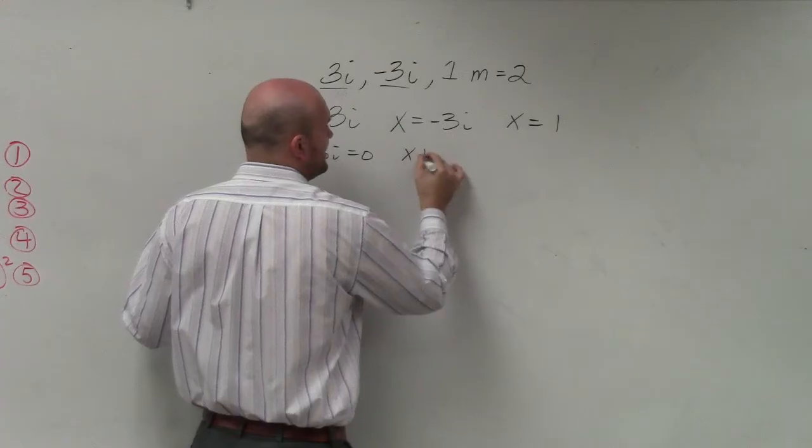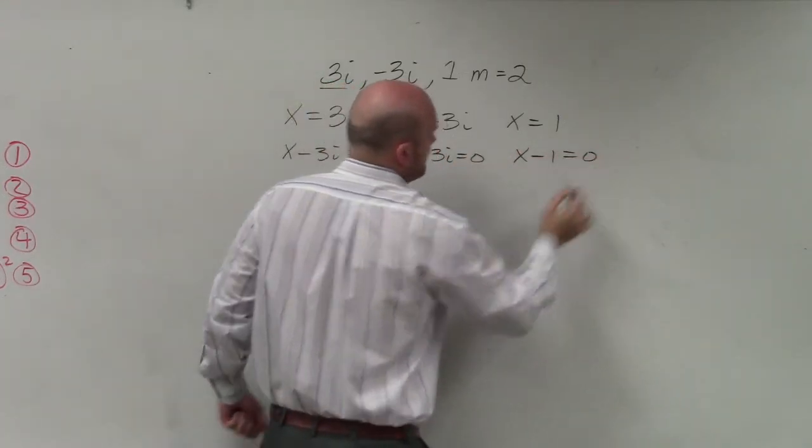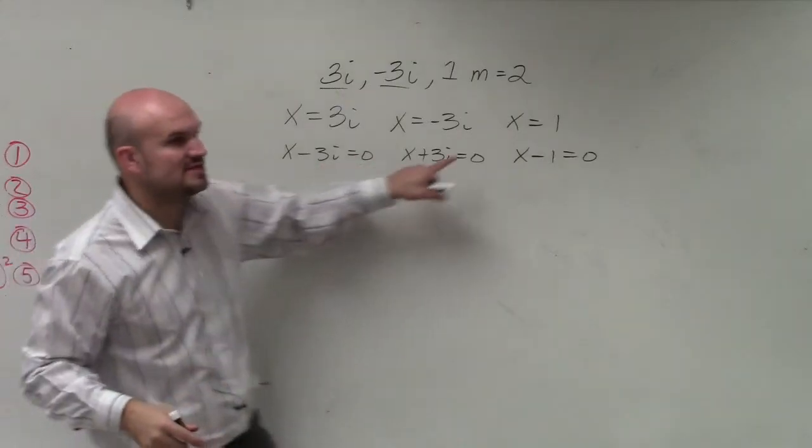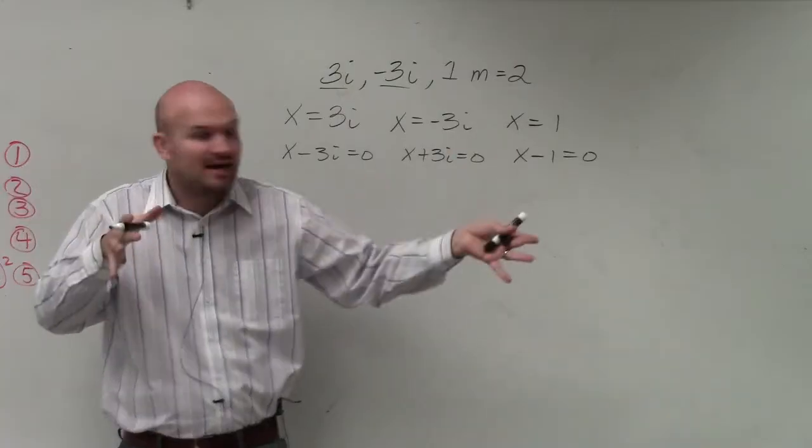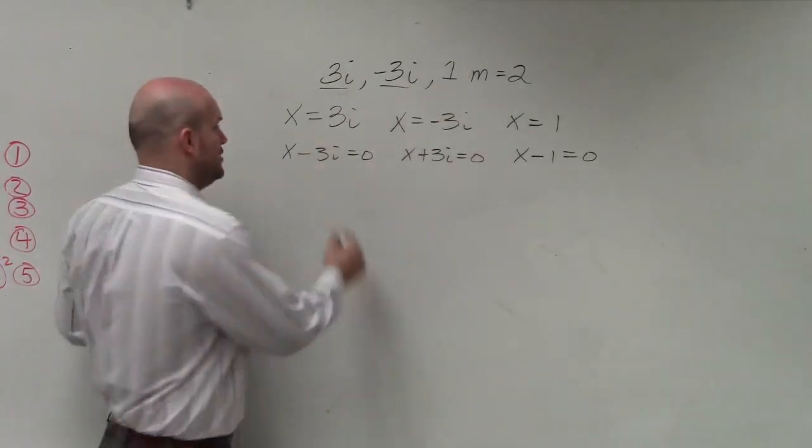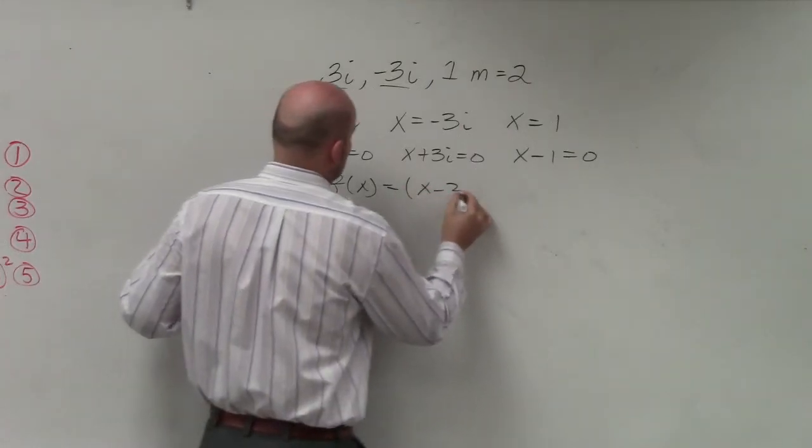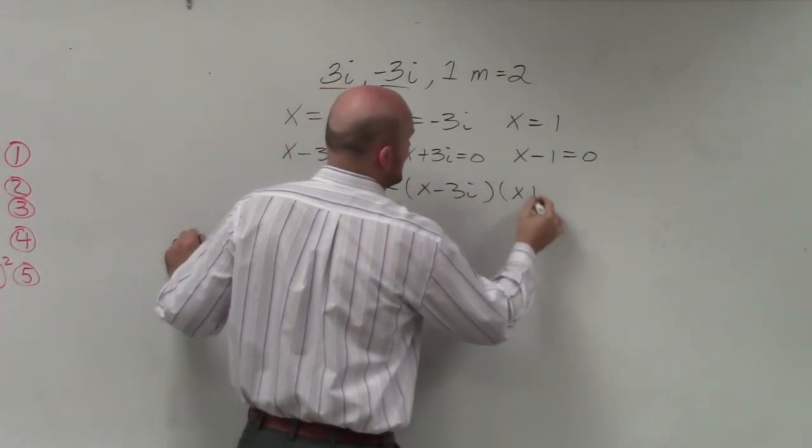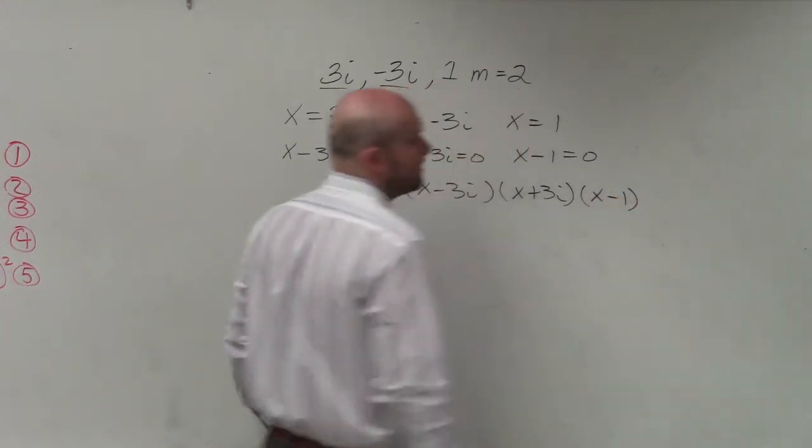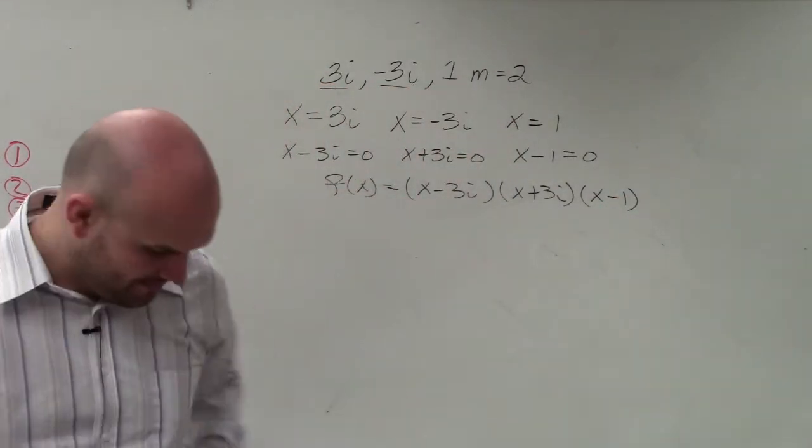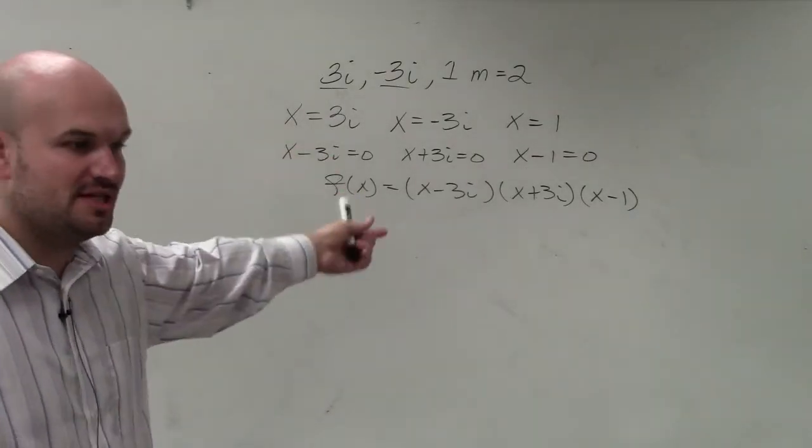Since they're all set equal to 0, those are the factors. I can write the factors multiplied by each other to give me my polynomial. So f of x equals x minus 3i times x plus 3i times x minus 1. But now, here comes into that multiplicity.